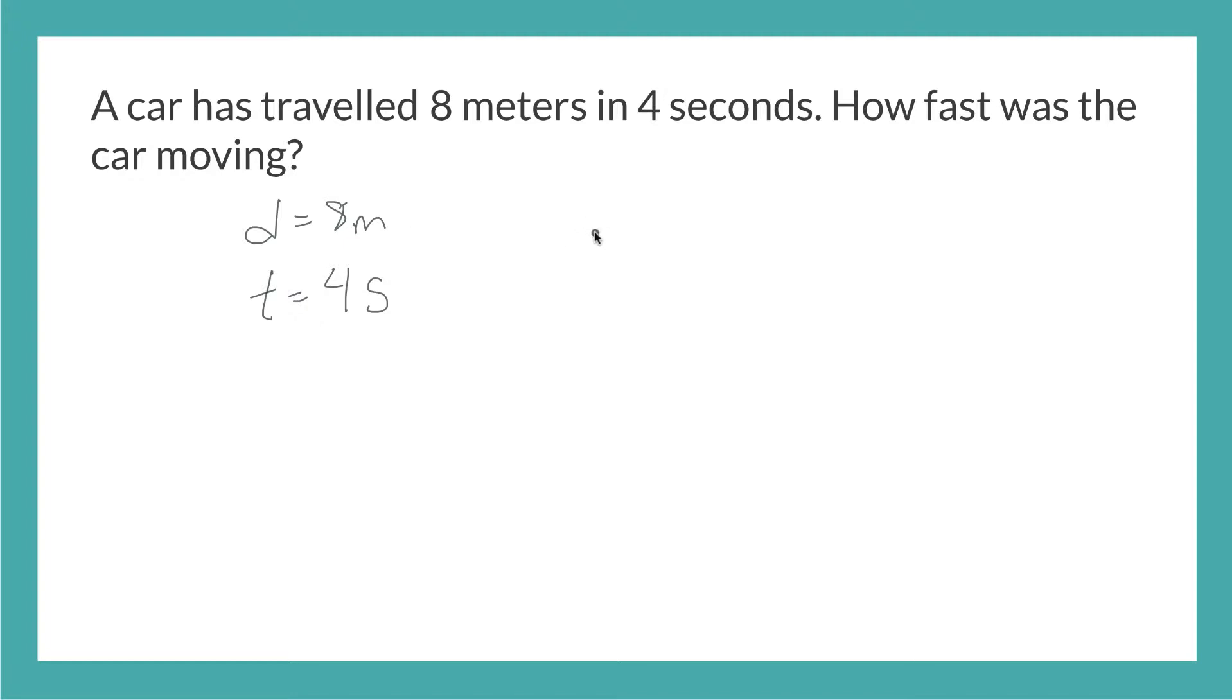So we can write this out. We know that the car went 8 meters, and it took the car 4 seconds. So it traveled this far. We'll put that on top. And it took 4 seconds. But we can divide these numbers so that we get a nicer looking, smaller number.